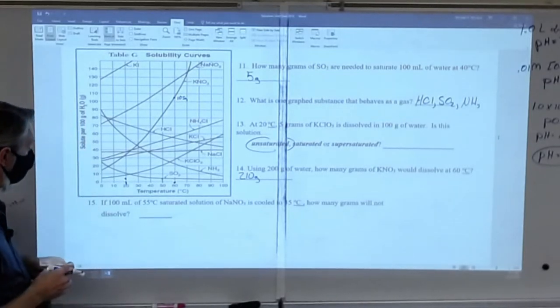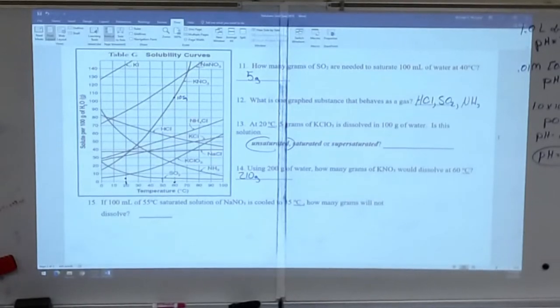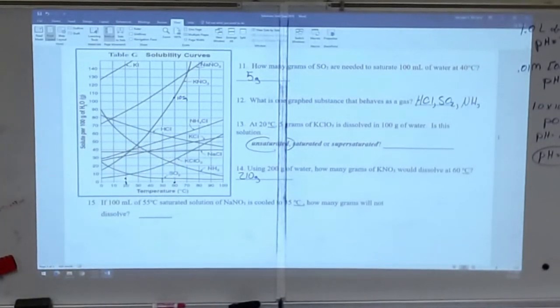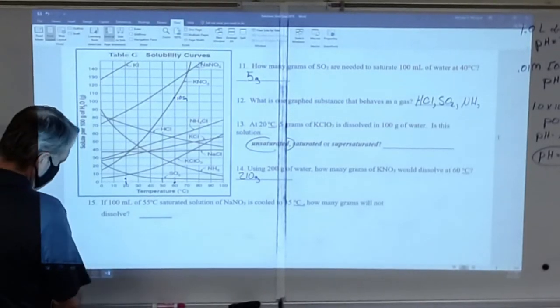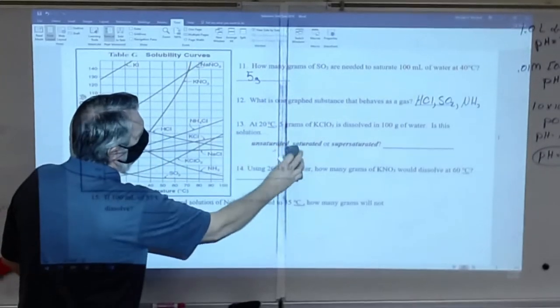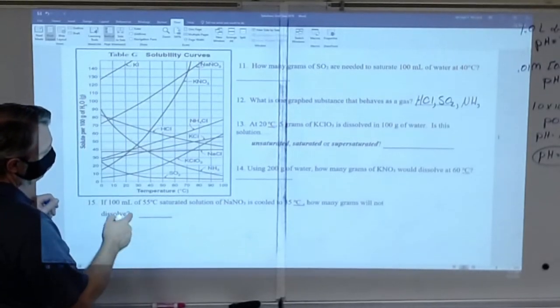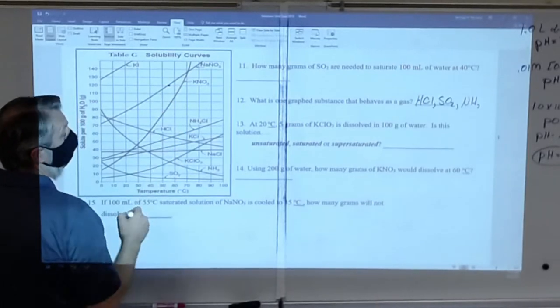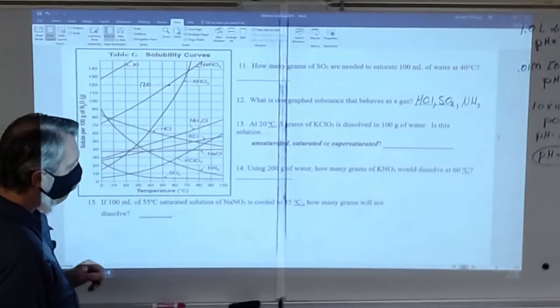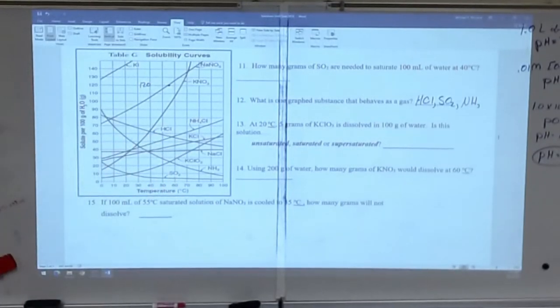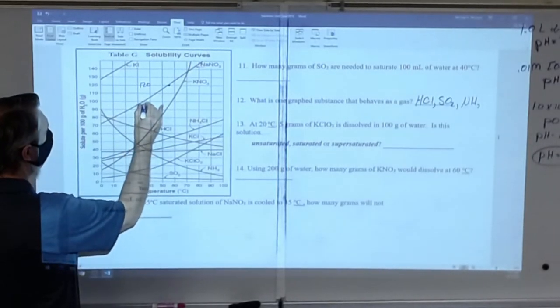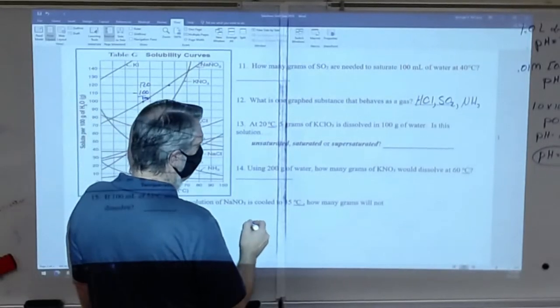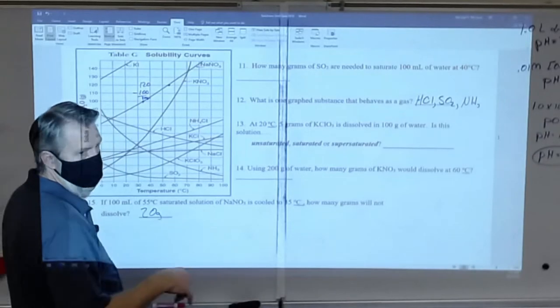If 100 milliliters of 55 degrees Celsius saturated solution of sodium nitrate is cooled to 35 degrees, how many grams will not dissolve? So I've got sodium nitrate. There it is. I've got 55 degrees, so I'm right here in the middle, right here. So I'm at 120. And I'm going to cool this down to 35. And at 35, I would have 100. So this is 120 minus 100. So 20 grams would not dissolve or 20 grams would fall out of solution.